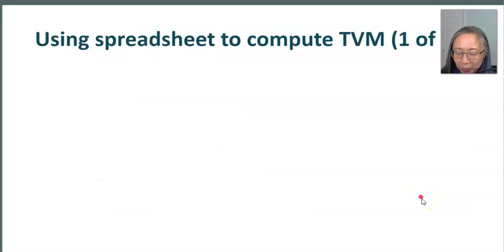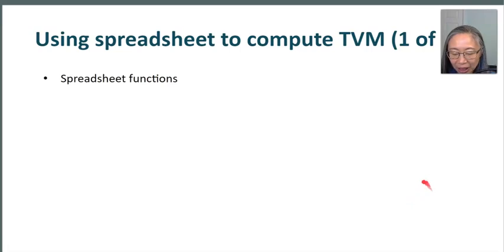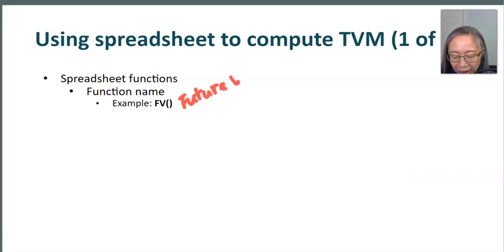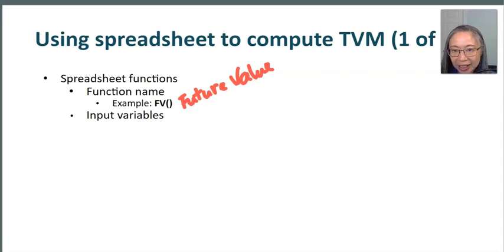We'll be using a spreadsheet to compute the time value of money concepts we've introduced. When you use a spreadsheet, you'll use functions. Spreadsheet functions have two main components: the name of the function, and the input variables. For example, to compute future value, you use the future value function, named FV. You need to provide input variables for the spreadsheet to do the calculation.